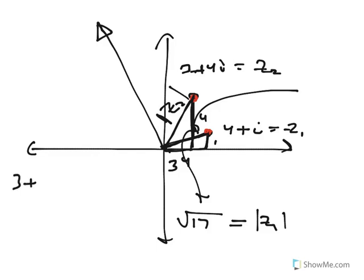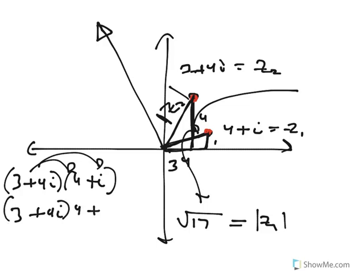Now, if I do 3 plus 4i times 4 plus i, I could do a little distributive property thing here and get 3 plus 4i times 4 plus 3 plus 4i times i. 3 plus 4i times 4 is a dilation by a factor of 4, so it's going to be this big line here. And 3 plus 4i times i is a rotation of this by 90 degrees.